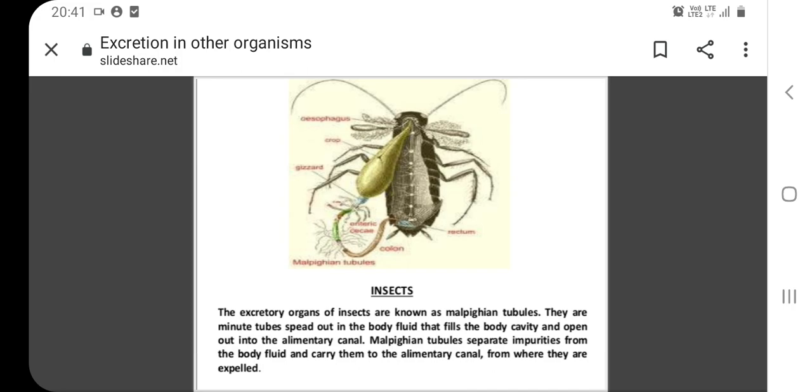The malpighian tubules work cooperatively with specialized glands in the walls of the rectum. The body fluids are not filtered as in the case of nephridia.